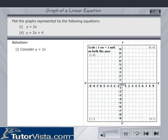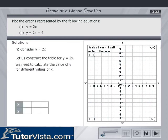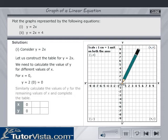Solution for y is equal to 2x. Let us construct a table of corresponding x and y values for this equation. For x is equal to 0, y is equal to 2 into 0 is equal to 0. Point 0, 0 is plotted on the graph as shown.